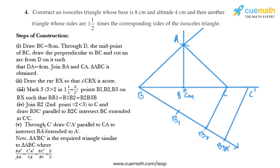Now in the next step, through C' draw C'A' parallel to CA to intersect BA extended at A'. So we'll draw a line parallel to AC and name this point of intersection as A'. So we have got triangle A'BC' as the required triangle.